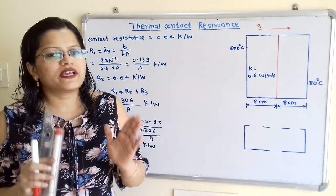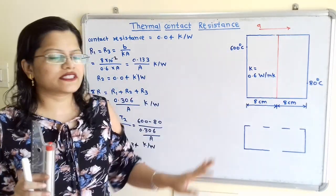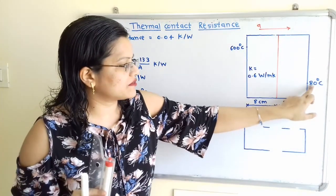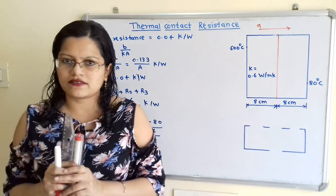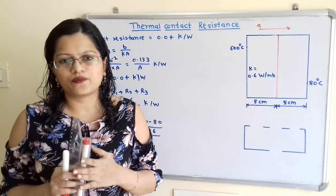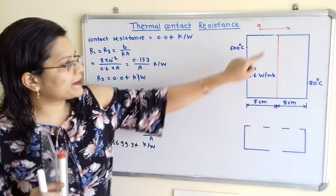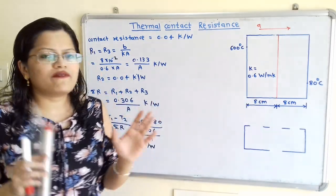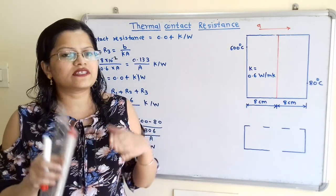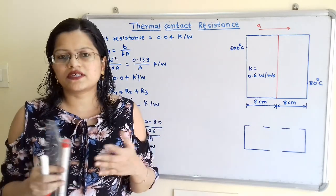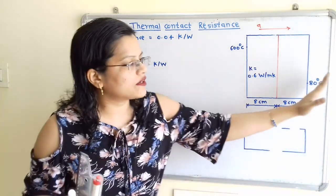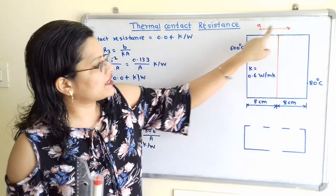For this contact surface, contact resistance is given as 0.04 Kelvin per Watt. The temperature of the outside surface of this composite is given. This outside surface is 600 degree Celsius and this other outside surface is 80 degree Celsius. We have to find out the heat flux and the temperature at the interface. We will assume that heat flows from left hand side towards the right hand side, so we show the direction of Q.